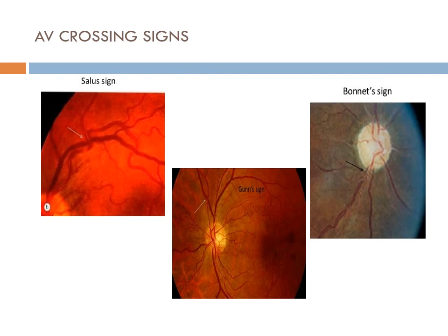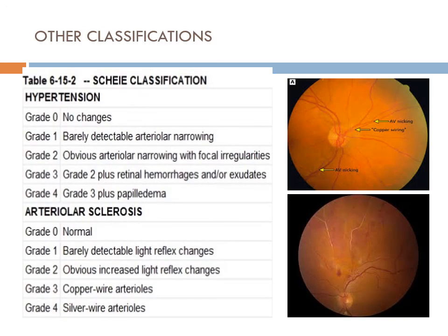AV crossing changes include: Salus sign, Gunn sign, and Bonnet sign. Find out the details of Gunn sign, Salus sign, and Bonnet sign in your textbooks.